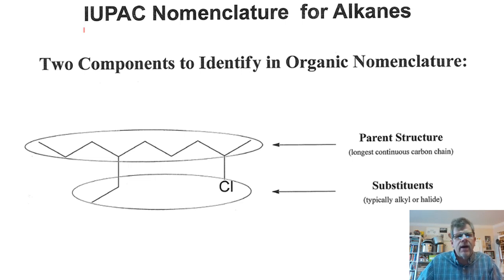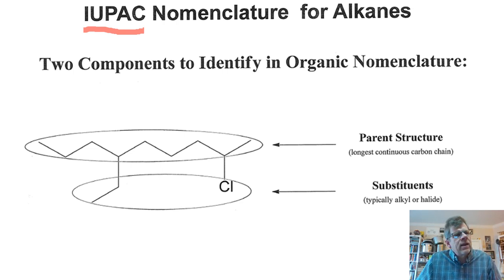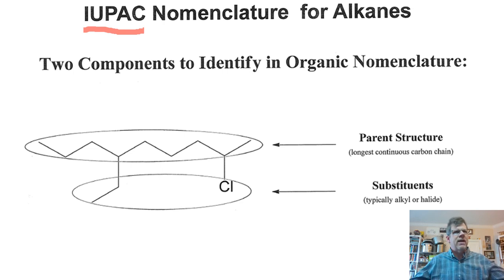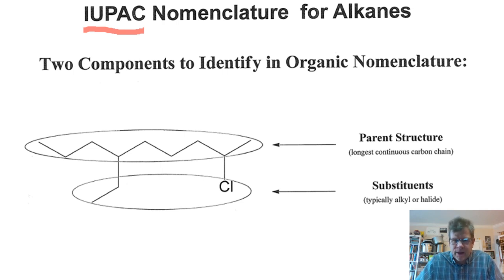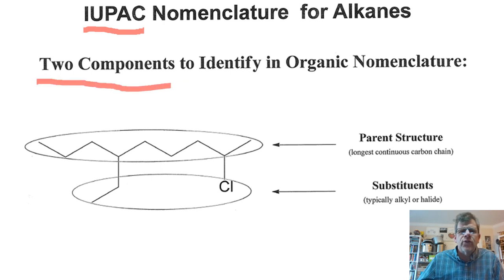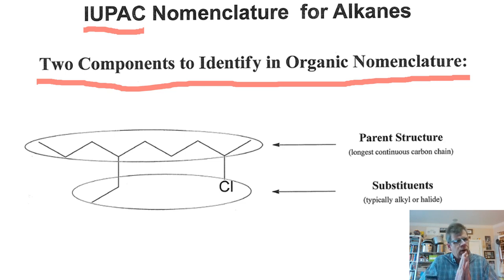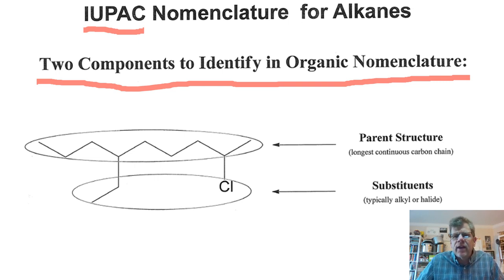We have the IUPAC — or UPAC — system of nomenclature for alkanes. IUPAC is an acronym for International Union of Pure and Applied Chemists. They bring people together to agree on how to name compounds, so that naming a compound in America is the same as naming it in Nigeria or Poland. In IUPAC nomenclature for alkanes, there are two components to identify: the parent structure and the substituents.